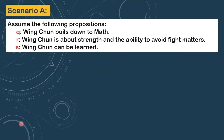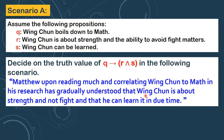This is the first scenario. Let us recall these three propositions: Q, R, and S. We are going to decide on the truth value of this compound statement. Given this scenario, if Q, then R and S. If you want to translate this in words: if Wing Chun boils down to mathematics, then Wing Chun is about strength and ability to avoid fight matters, and it can be learned.